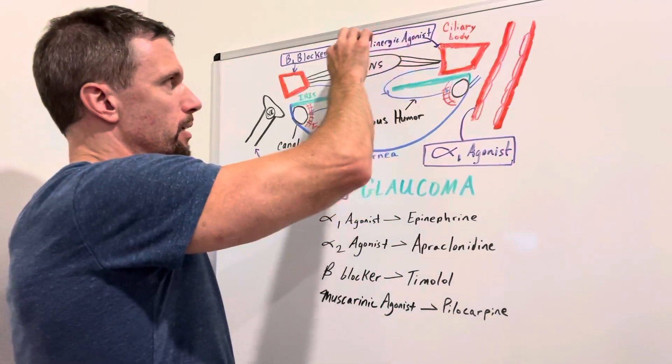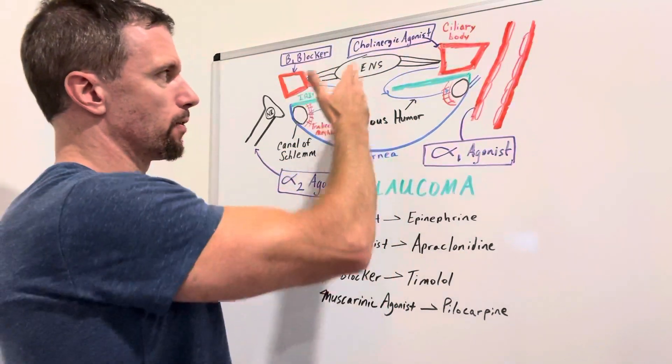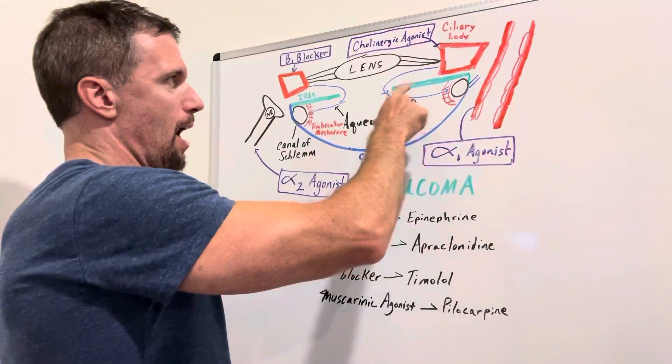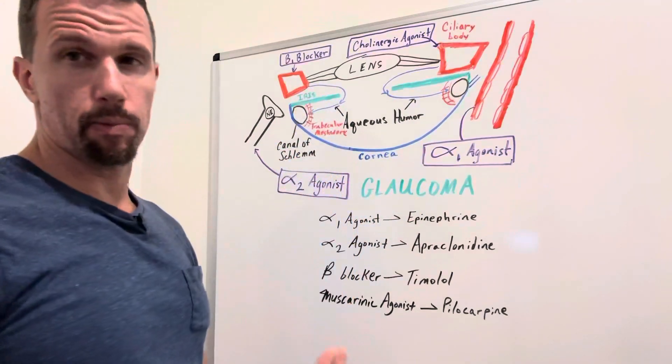And then you have the lens here that between the two of those, those really do the focusing and refraction. And then you have the iris, this is the color part of the eye, so this person has green eyes.